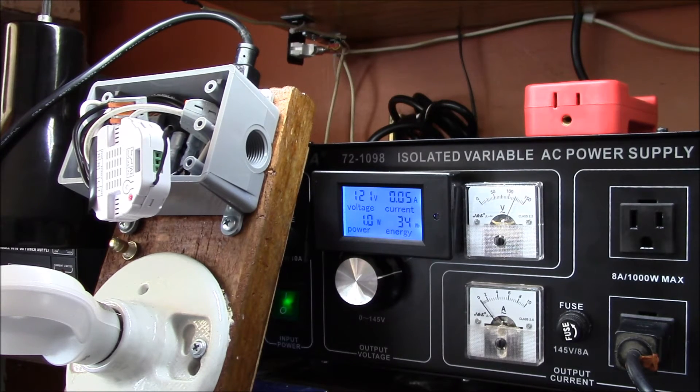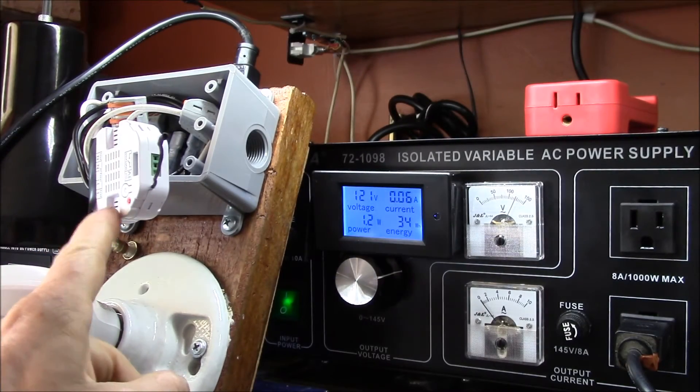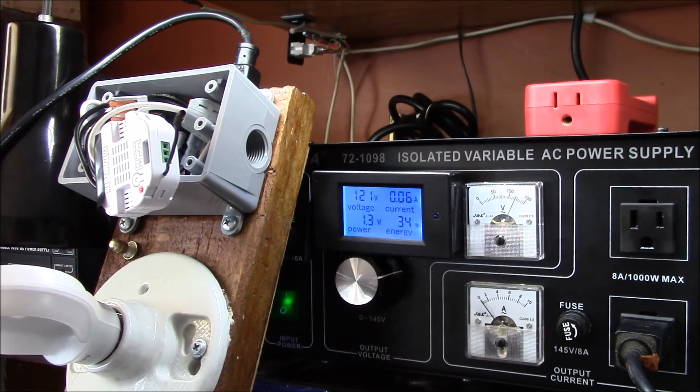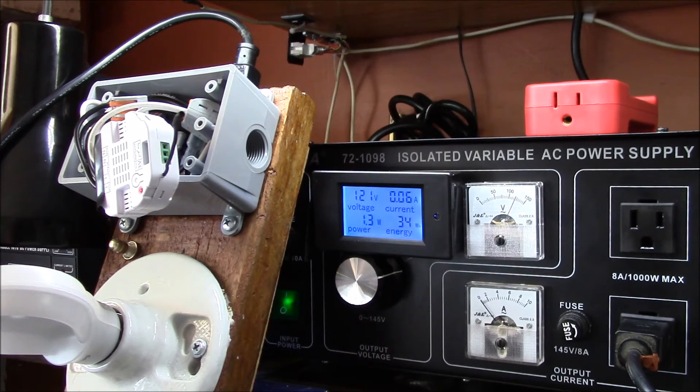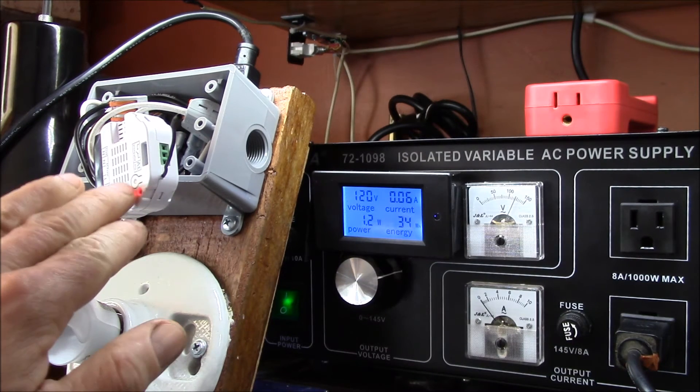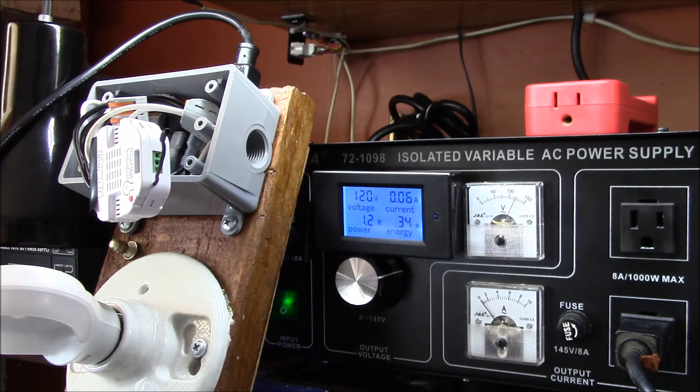So it uses four-tenths of a watt just sitting there. Now what I'm going to do—watch the light on the device—I'm going to turn it on. I'll turn my light off so you can see the little red light is on there. So the dimmer is on but it's not got any load on it.